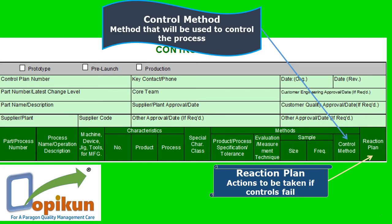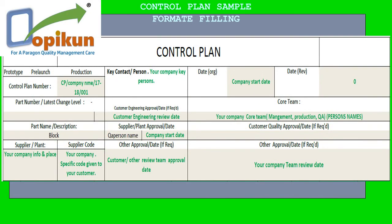Control plan sample for form filling. The control plan number — you can name it as: control plan, your company name, 2017 or 2018, 001. Key contact person — your company's key persons. Date — company start date. Date revision, if any. Part number and latest change level, for example 12345, revision 00.